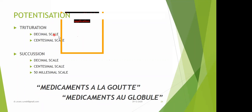The drug strength is 1/10 for decimal and 1/100 for centesimal. The designation for decimal scale is X, and for centesimal scale it is written as either C or CH. Even without any designation, it indicates the centesimal scale. Roman numbers are also used for centesimal scale — for example, 1000 potency is written as 1M, 50,000 potency as 50M or LM.